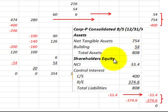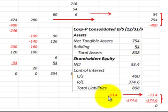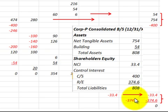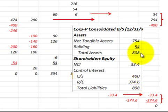Looking at shareholders' equity, it's broken down between the non-controlling interest of $33,400, which was calculated as total interest for the non-controlling shareholders off the worksheet. The controlling interest includes common stock of $400,000 from the beginning of the year plus retained earnings of $374,600 allocated to the controlling interest. Summing these gives total liabilities of $808,000, which matches total assets of $808,000.